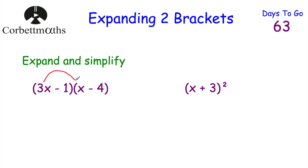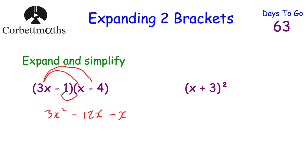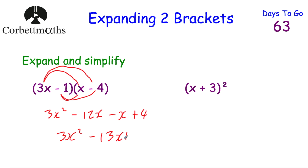For the first one: 3x times x is 3x squared. Then 3x times minus 4 — positive times negative is negative, 3x times 4 is 12x — so minus 12x. Then minus 1 times x is minus x. And minus 1 times minus 4 — negative times negative is positive, 1 times 4 is 4 — so plus 4. Simplifying the middle: minus 12x minus x is minus 13x. So the answer is 3x squared minus 13x plus 4.